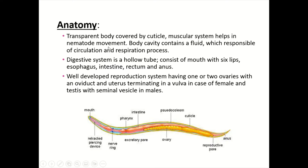Discussing the anatomy in detail: the transparent body is covered by a cuticle, and the muscular system helps the nematodes move. The body cavity contains a fluid which is responsible for circulation and respiration. The digestive system is a hollow tube consisting of a mouth with six lips, esophagus, intestine, rectum, and anus.